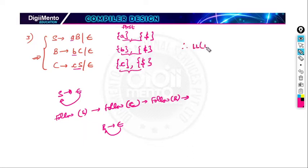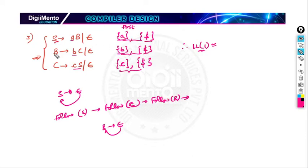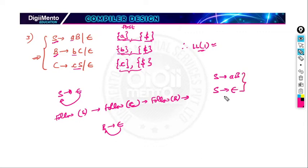That means we do not have multiple productions in a single cell, so this grammar is LL1 grammar. One important thing to note: you should never compare two productions which have different left-hand sides. We are not comparing productions where one has LHS S and another has LHS B. We only compare the productions which have the same left-hand side.